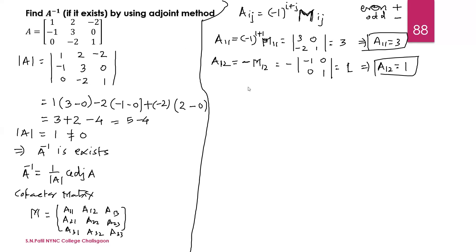Now A13: 1 plus 3 is 4, so the sign is positive. M13 is the minor of element minus 2, obtained by deleting its row and column. The submatrix is minus 1, 3 and 0, minus 2. The determinant is minus 1 into minus 2, that is plus 2, minus 0. So A13 equals 2.